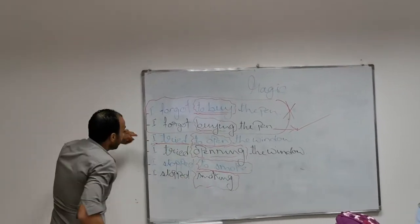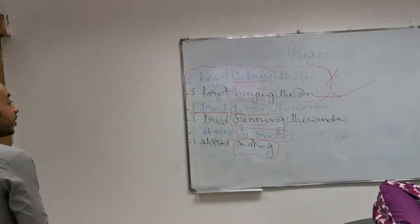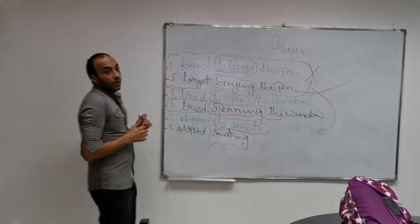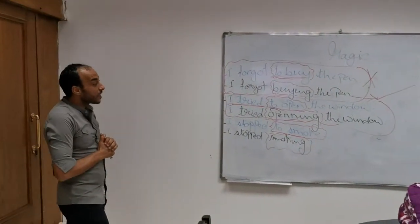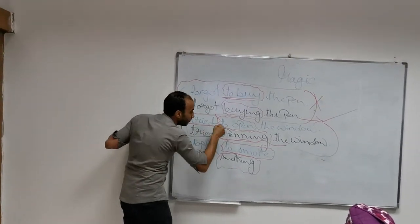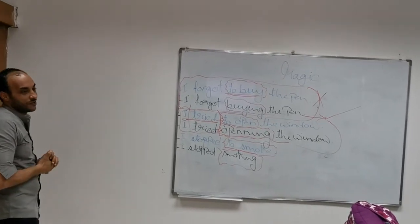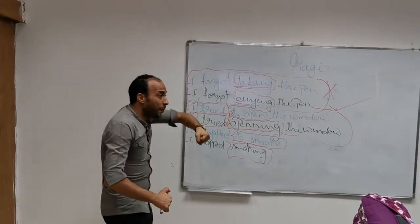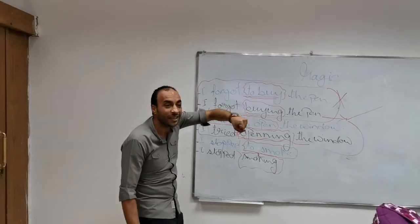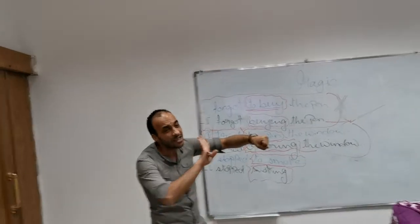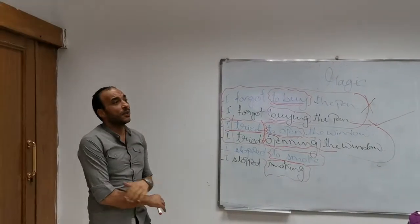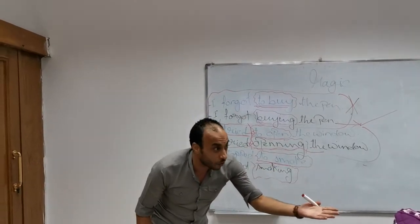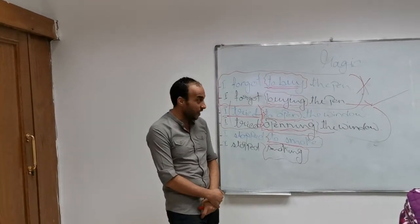The second verb: 'try.' First sentence — I tried to open the window. Second sentence — I tried opening the window. Do you see a difference? 'I tried to open the window' — I tried but I couldn't, I didn't open it, but I spent some effort. But here, for example, I'm feeling hot — I tried opening the window, meaning I opened the window already, but it's still hot.